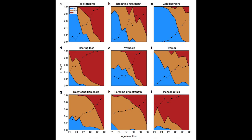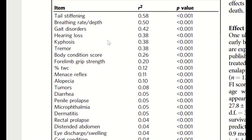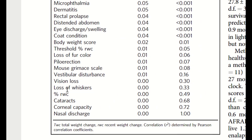And that's most evident in the second figure here, where you can see that tail stiffening, breathing rate and gait disorders, hearing loss, kyphosis and tremor, have pretty strong correlations with chronological age. Conversely, some of the items had no correlation. This included vision loss, loss of whiskers and corneal capacity, just to name a couple.